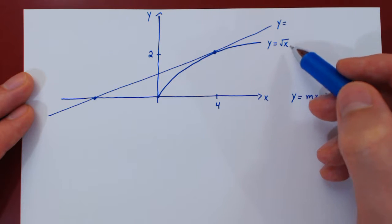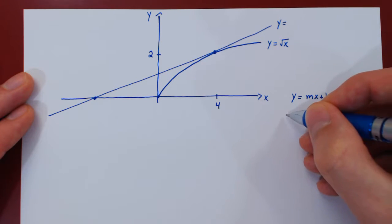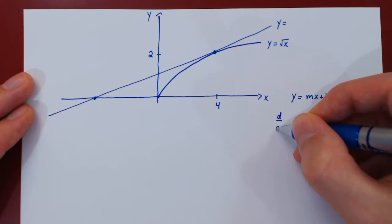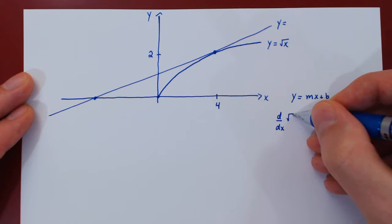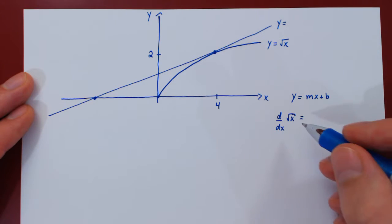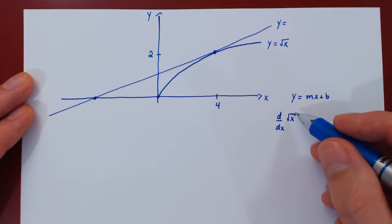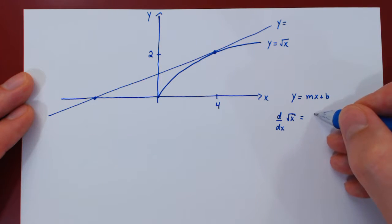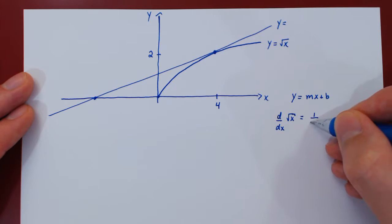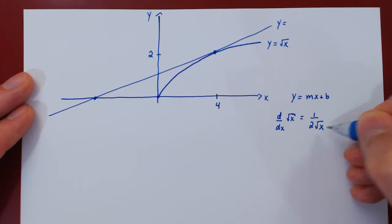Let's differentiate root of x. By the power rule, the derivative of root of x — thinking of x to the 1/2 as the square root of x — we get 1 over 2 root of x after simplification.